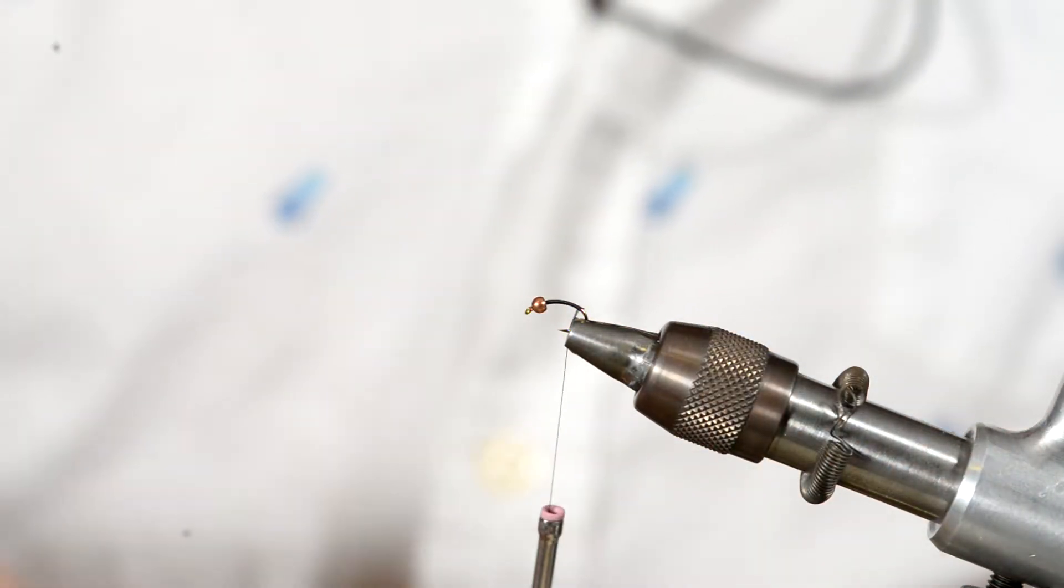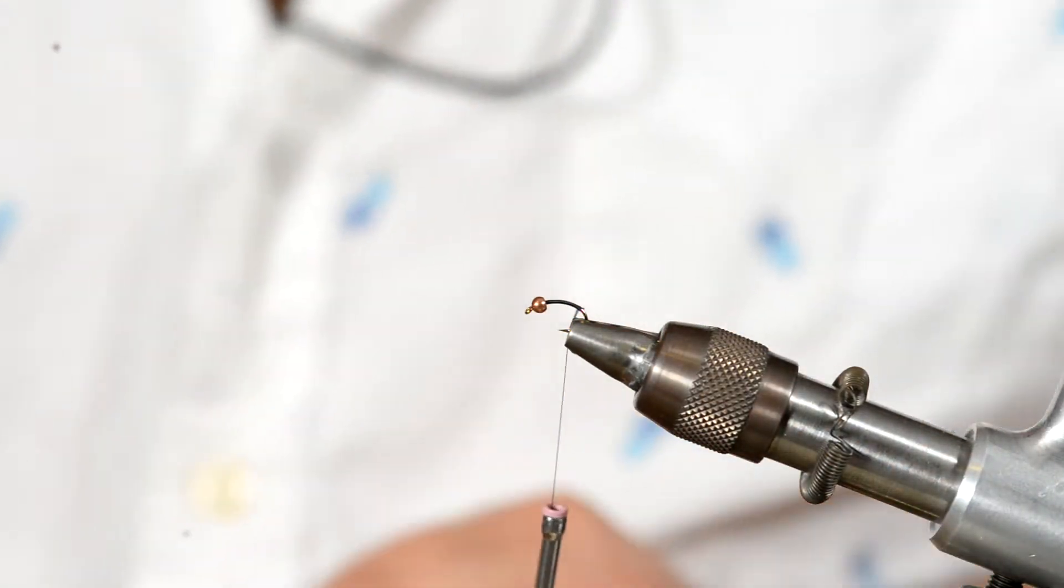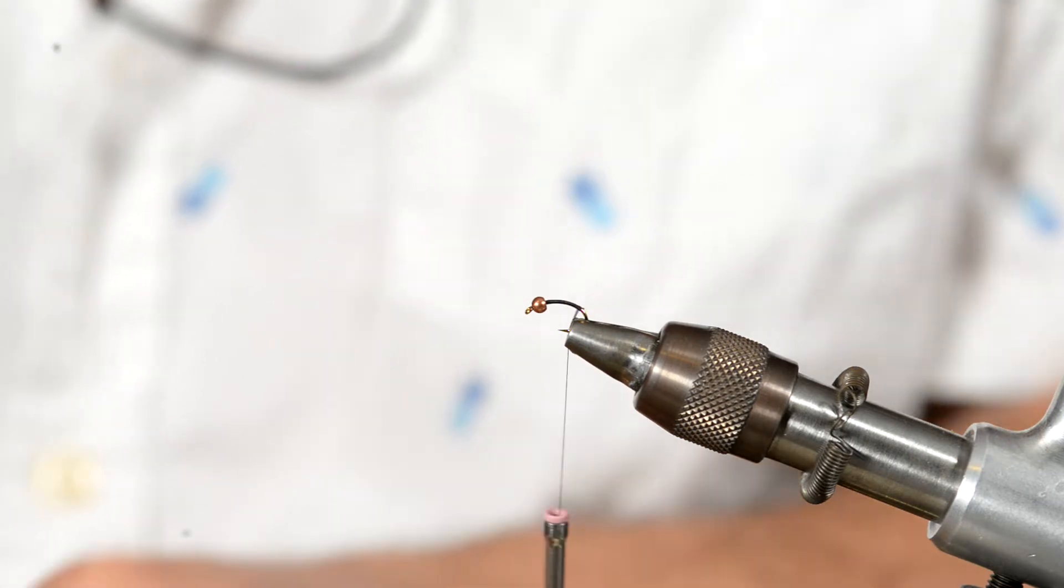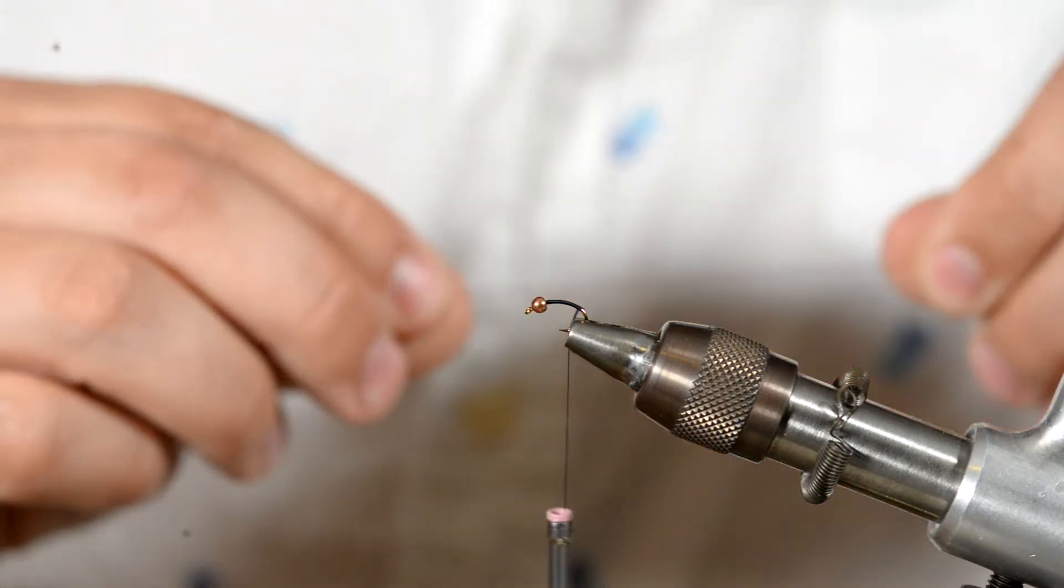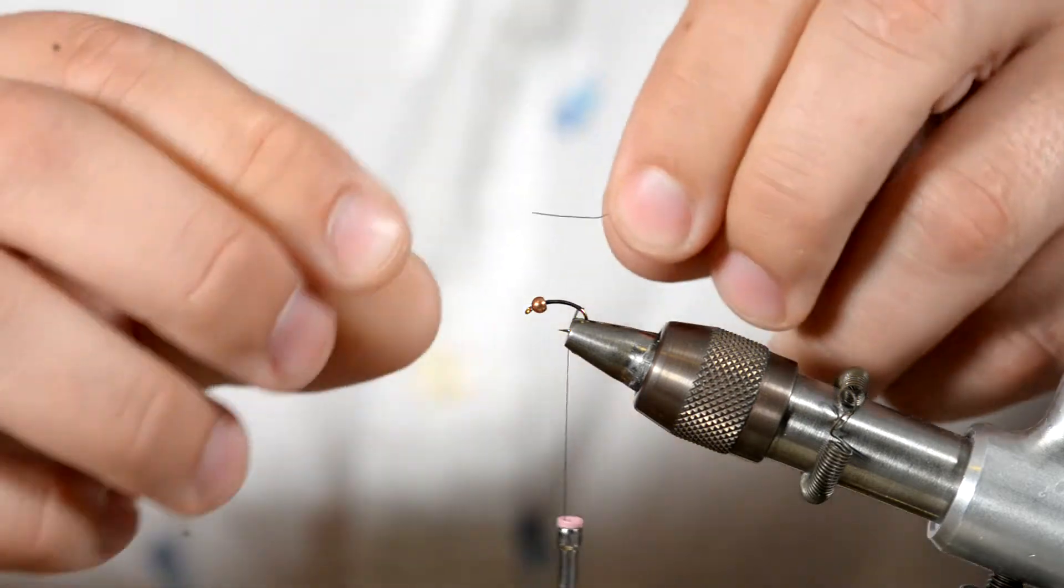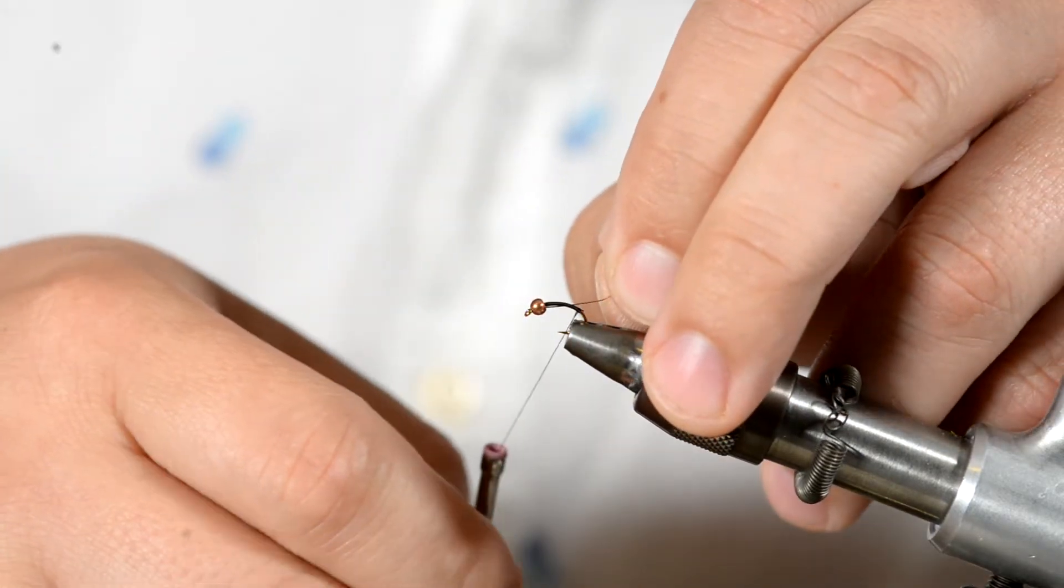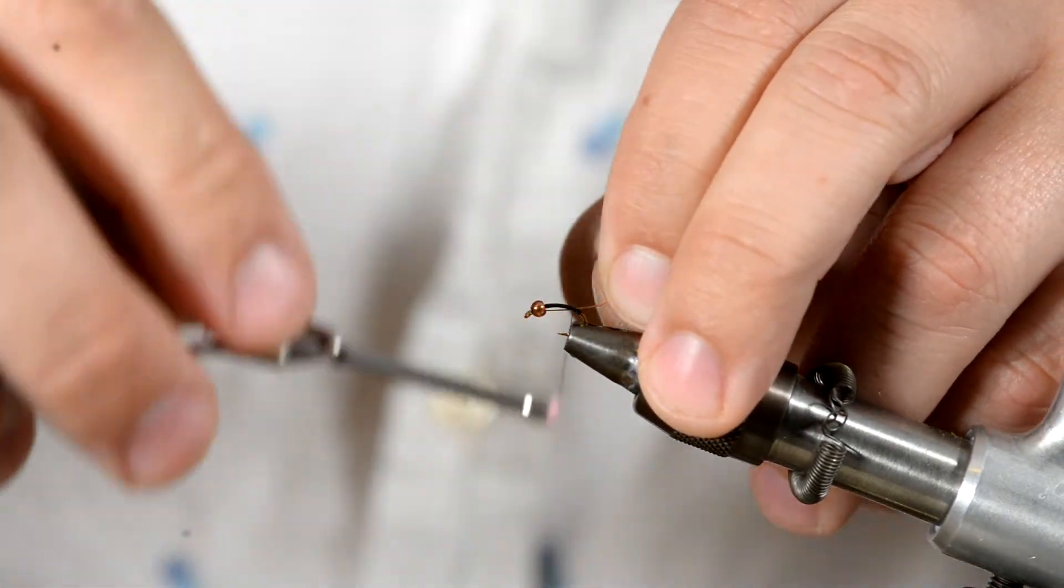From there, take your copper Brassy wire and trim off a section, probably about three inches in length. This fly likes to take a lot of wire, so give yourself plenty of room. And tie it on either side of the hook.